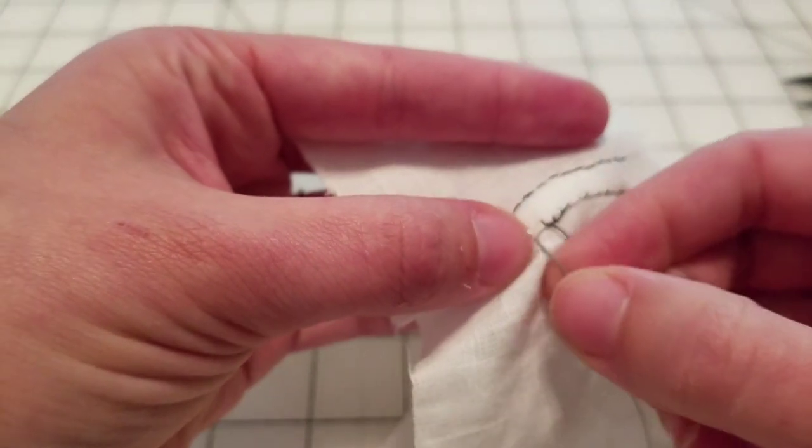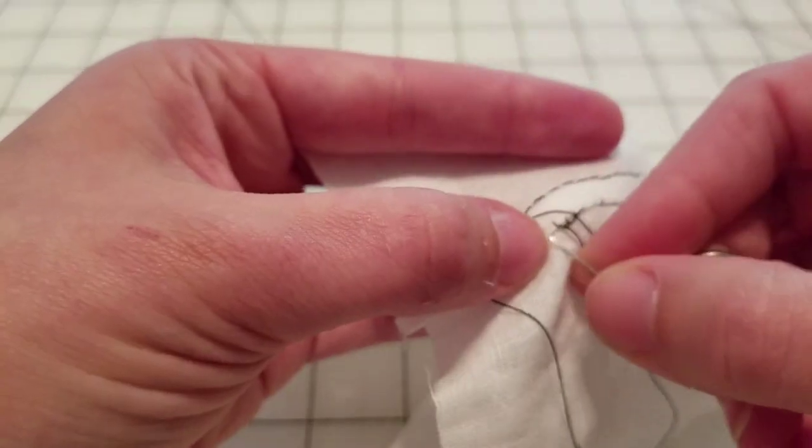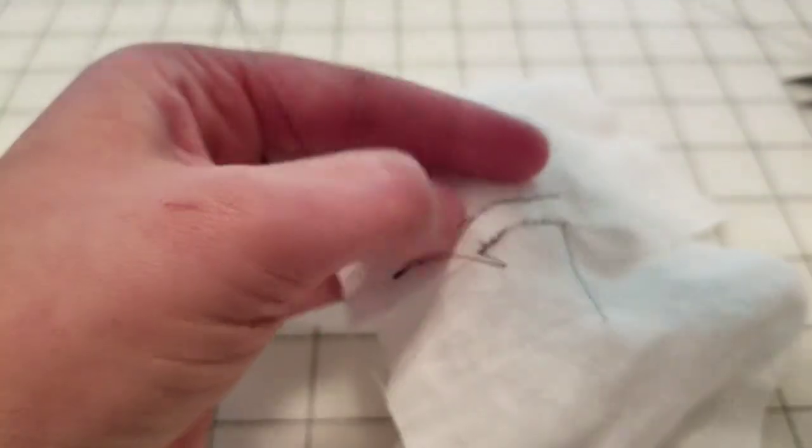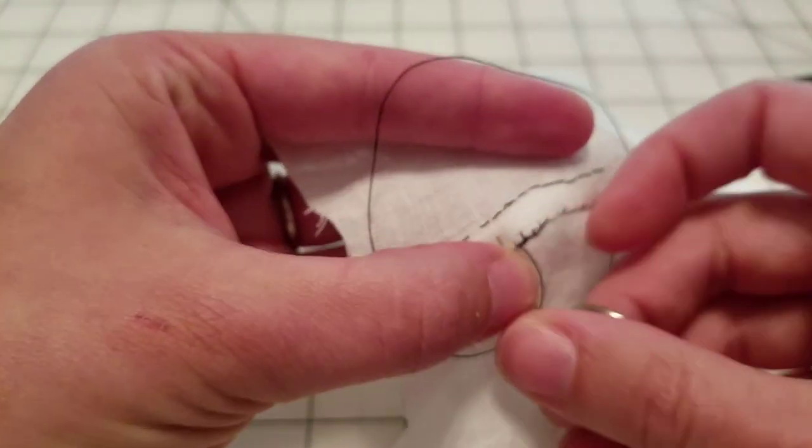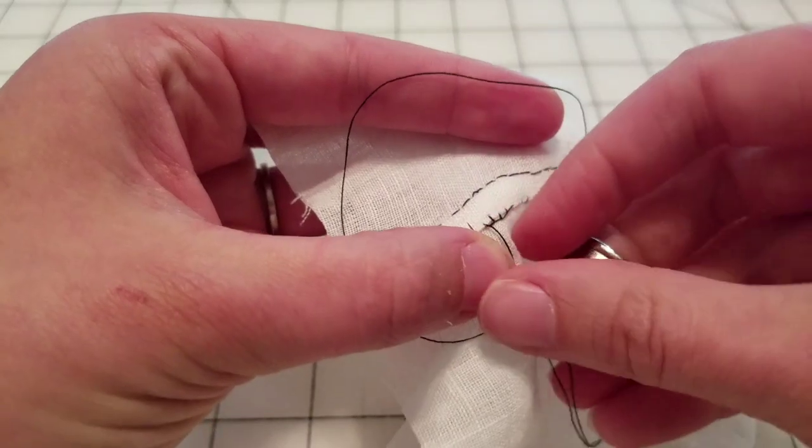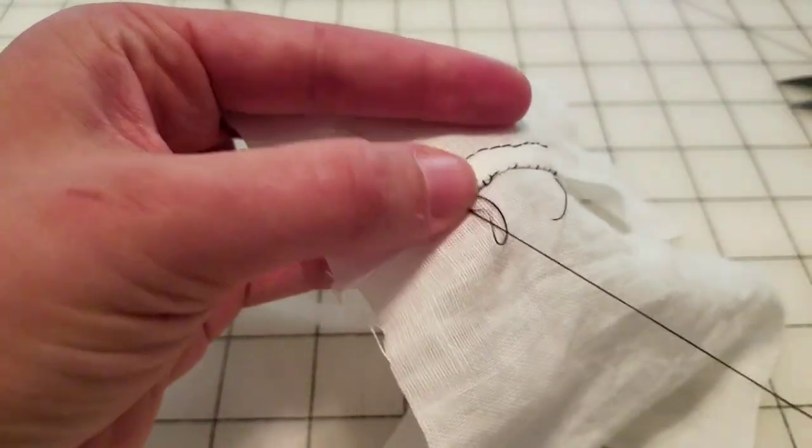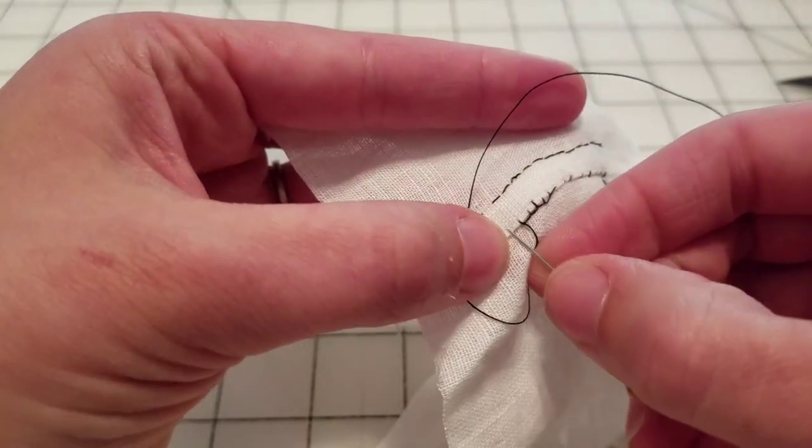And in the historical garments, they are usually closer to 1/16th inch, but that would be almost impossible for it to show up on camera. Also, if you're just starting out, it's a little bit hard to make one that tiny.